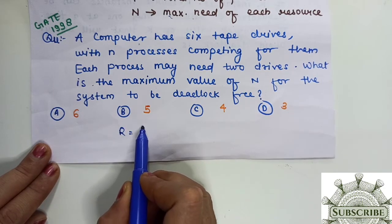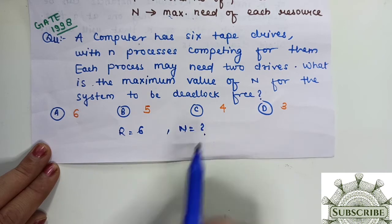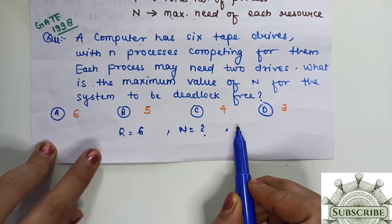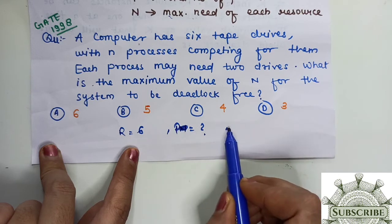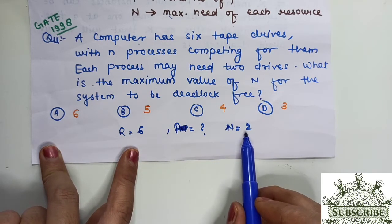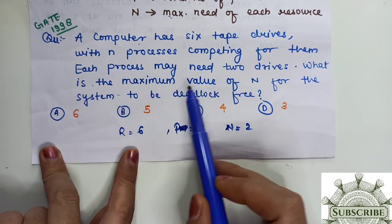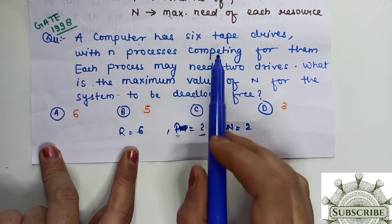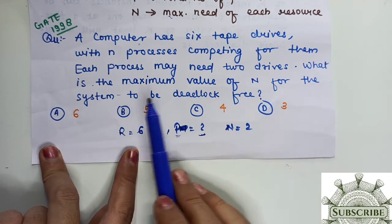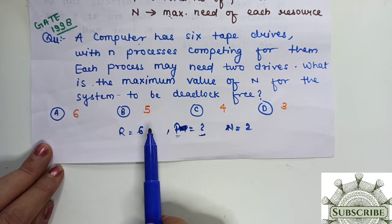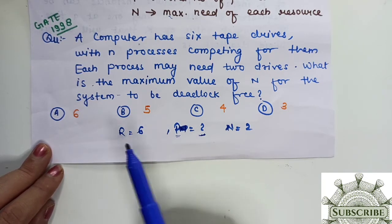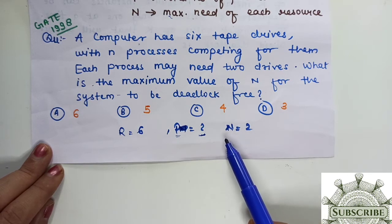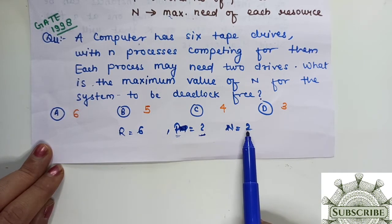A computer has 6 tape drives with n processes competing for them. So R is given as 6, and number of processes P, I don't know. Each process may need 2 drives, so the demand of each process is 2. What is the maximum value of n, meaning how many processes can we have in the system where each process will demand 2 instances of this resource type and we will avoid deadlock?